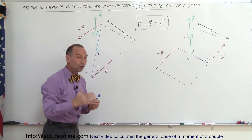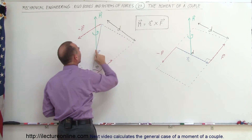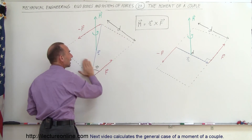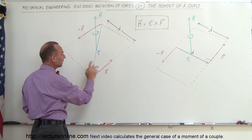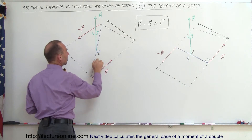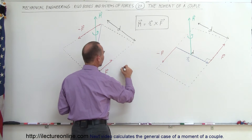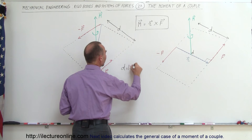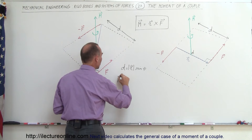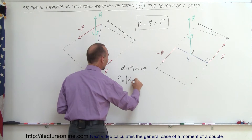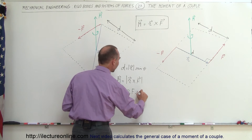Using your right-hand rule: point your fingers in the direction of the position vector, then curl your fingers in the direction of the force — you can see that the moment points upward. This moment is perpendicular to the plane formed by the two forces of the couple. Taking the angle theta, where d is the opposite side and r is the hypotenuse, the magnitude d equals the magnitude of the position vector times the sine of theta. The magnitude of the moment equals the magnitude of r cross F, which equals the magnitude of r times the magnitude of F times the sine of the angle between them.